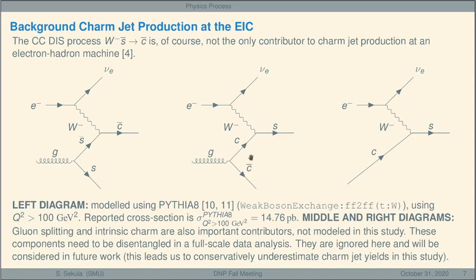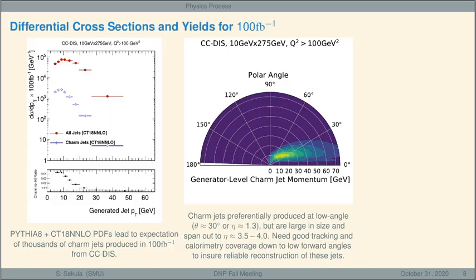Now, the middle and right diagrams, which involve intrinsic charm and also gluon splitting to charm, and these are entangled together inside the proton, they're very important. These will also lead to the production of, for instance, charm jets, but the trick here is that the Pythia 8 framework doesn't simulate these, and we're ignoring them for now in this study. They would lead to increased production of charm jets, so by ignoring them, we're effectively conservatively underestimating our charm jet yield at the end of this analysis. That said, these diagrams would need to be disentangled from one another in any future EIC-based analysis.